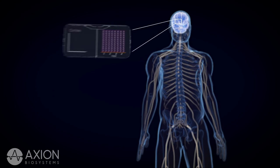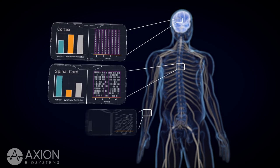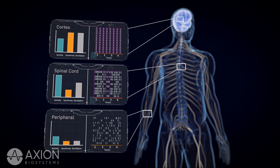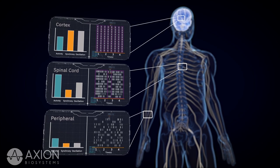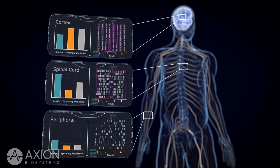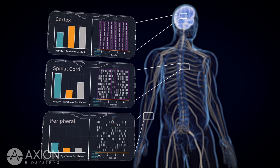These activity profiles act as a fingerprint for the culture, changing based on the composition of cells in culture, their health, maturity, genetic makeup, or chemical effects.